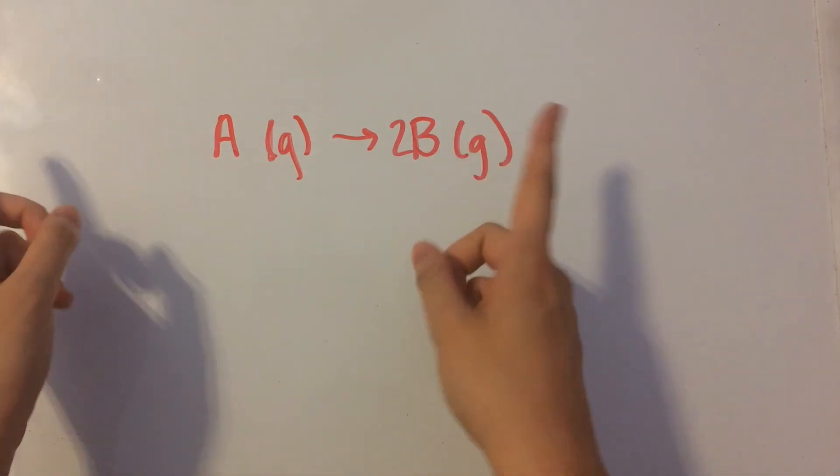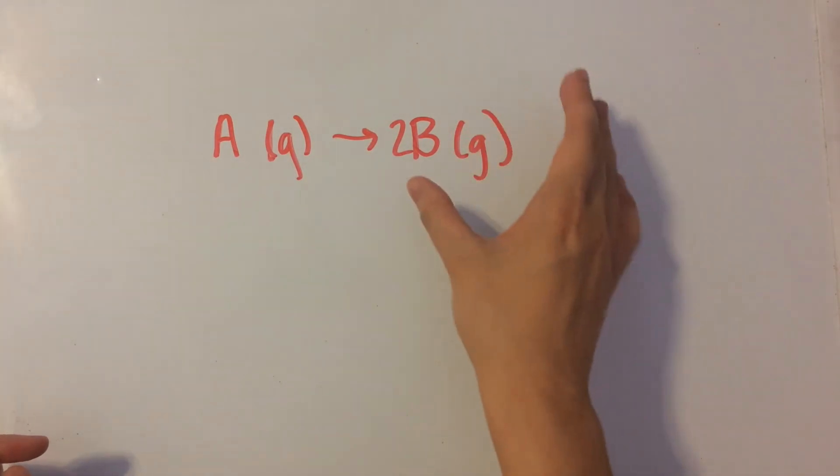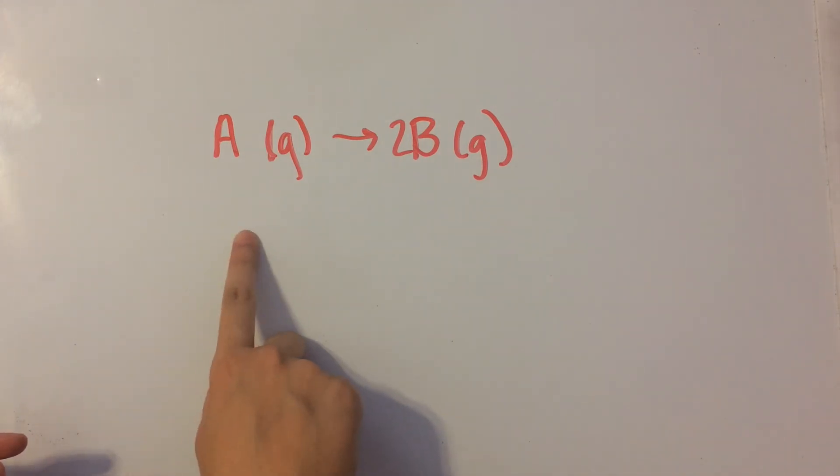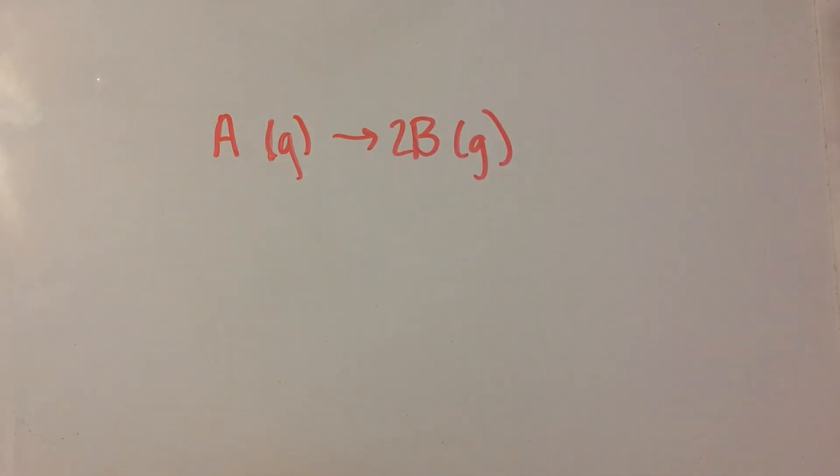So there's one mole of gas A over here and two moles of gas B over here. So since there's more moles of gas on the right side of the equation, entropy increases as you shift to the right because more moles of gas has more disorder compared to one mole of gas.